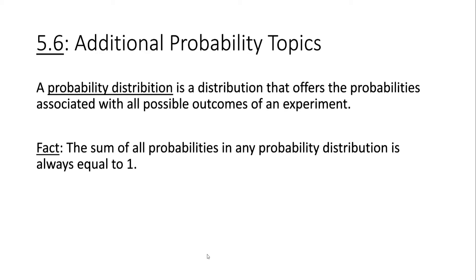In this video, we're going to be talking about probability distributions. A probability distribution is a distribution that offers the probabilities associated with all possible outcomes of an experiment. An important fact we need to keep in mind: the sum of all probabilities in any probability distribution is always equal to 1.